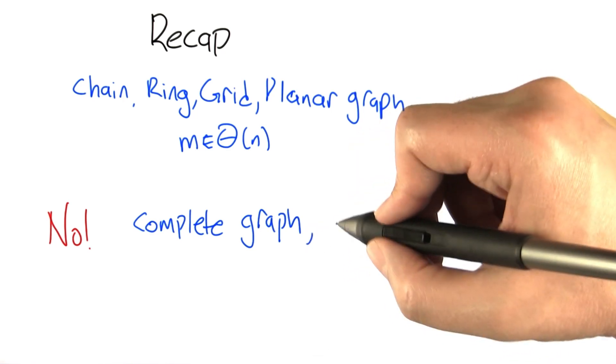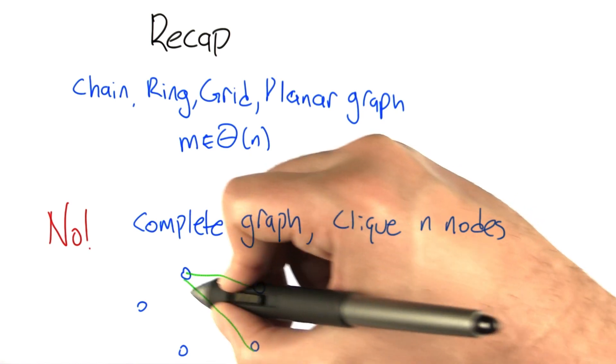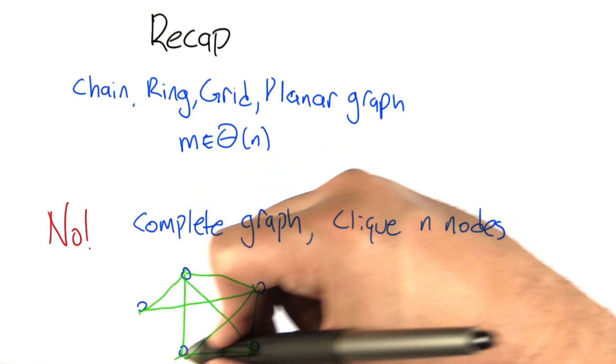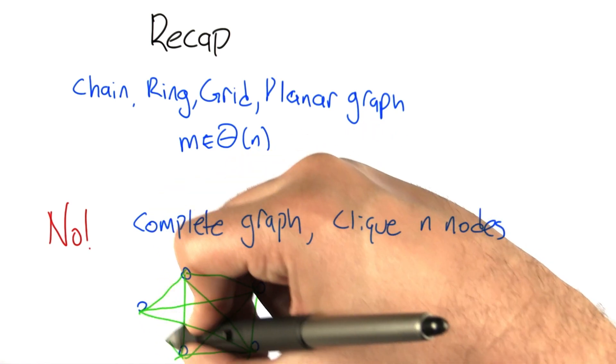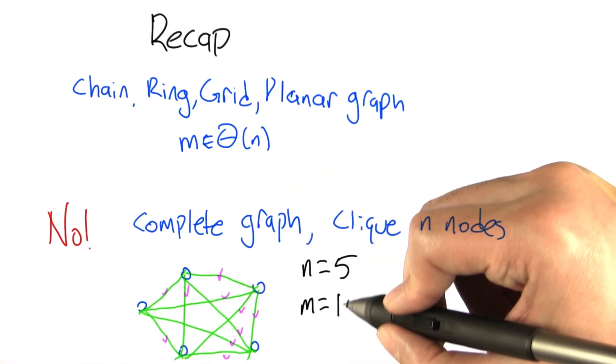Let's consider the complete graph, also known as a clique, on n nodes. In the complete graph, every node is connected to every other node. And you get very pretty star patterns if you fill these in. So in this case, we have 5 nodes and a total of 10 edges.